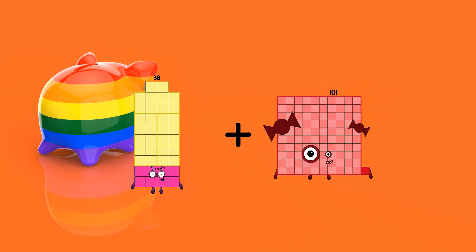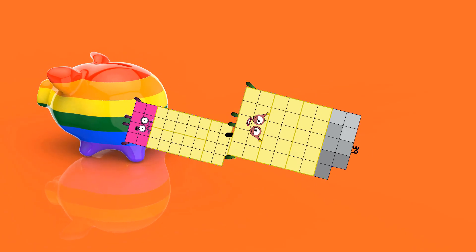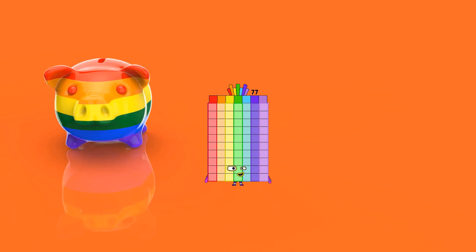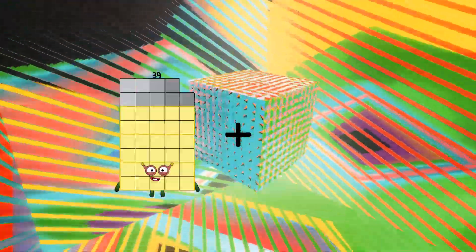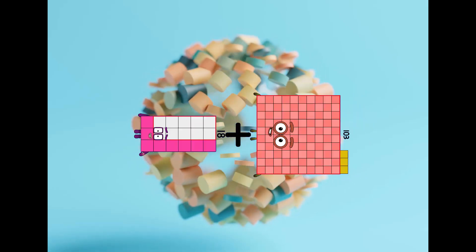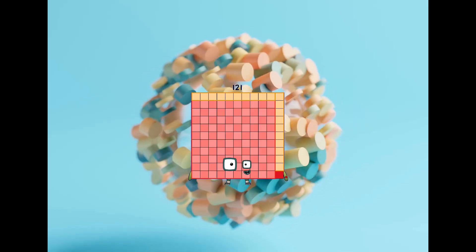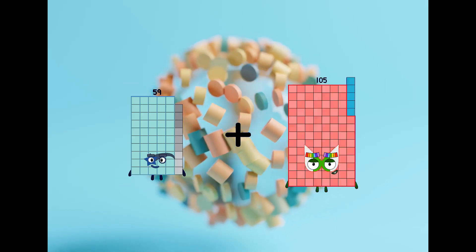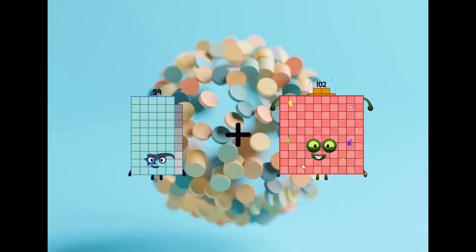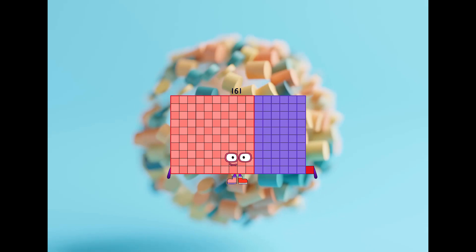38 plus 39 equals 77. 99 plus 94 equals 193. 18 plus 103 equals 121. 59 plus 102 equals 161.